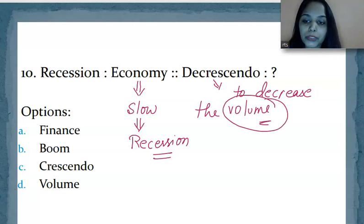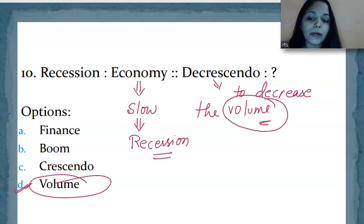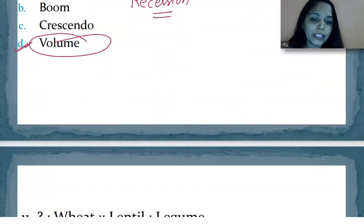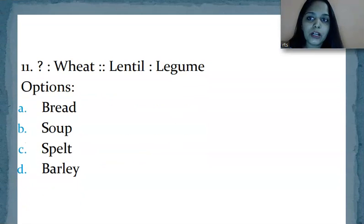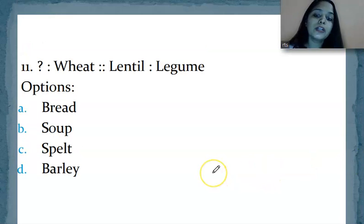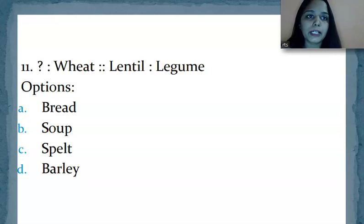You know that to decrease volume is called what, which is given here in option D. So obviously you will choose option D as your answer. I hope this is clear. Remember this word. And don't worry, you'll get this PDF. When this chapter is complete, this topic of analogy is complete, in the last video you'll get this PDF in the description box. So you can go there and revise these questions once.